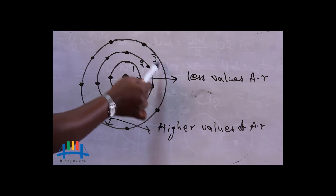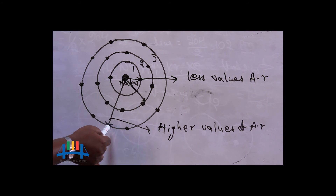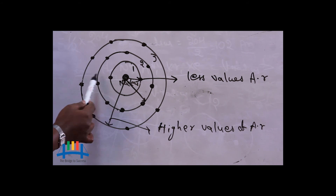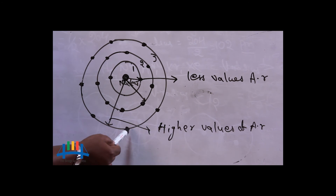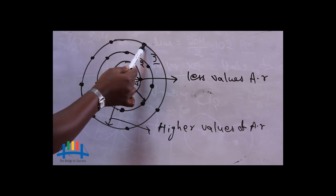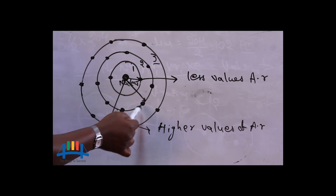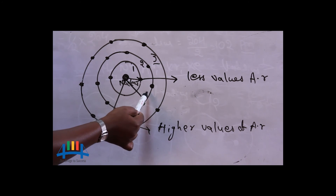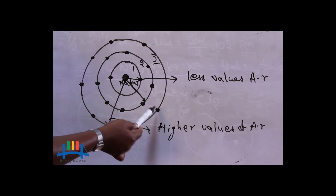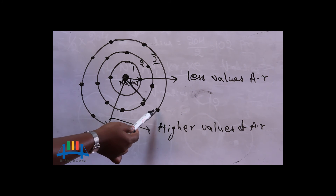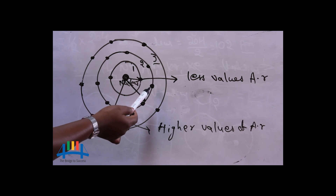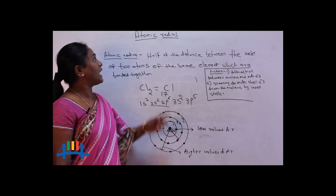The second factor is screening of outer shell electrons from the nucleus by inner shells — also called shielding. In the chlorine atom, there are three shells and the outermost is the third one. This third shell is covered or shielded by the two inner shells. Due to the presence of these inner shells, the outer shell electrons experience less nuclear force of attraction, which is why they have a larger size compared to first and second shell electrons. With this, I will end the topic of atomic radius.